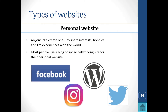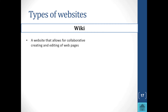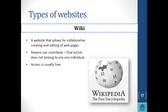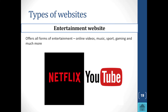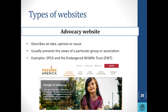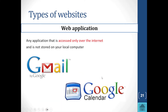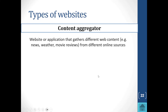We have personal websites, and you must know wikis — a website that allows collaborative creation and editing of web pages. This is why we don't always use Wikipedia as a reference, because we don't know who has contributed to the final article. We also have educational websites, entertainment websites, and advocacy websites that push a particular view, such as sites focused on endangered wildlife.